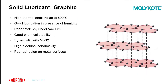Another common solid lubricant is graphite. This solid lubricant has very good temperature stability and great lubrication under humidity, as well as a low coefficient of friction under high loads and protection against fretting corrosion. It is worth noting that graphite is better suited to plastic interfaces, as it maintains relatively poor adhesion on metal.